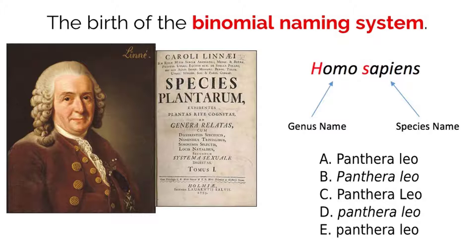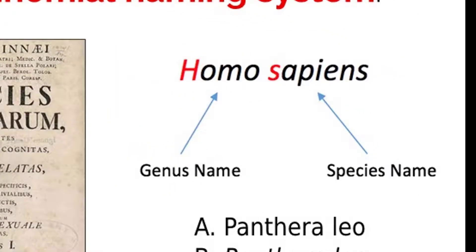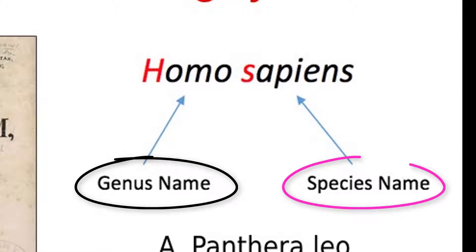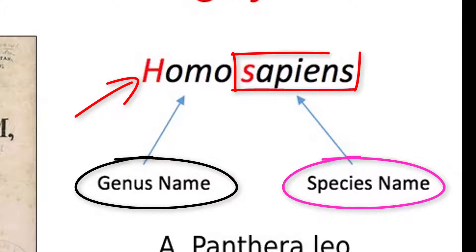This system requires each individual species to have a two-part name with very distinct formatting. This allows each individual organism to have a unique name that also classifies their relation to other organisms. A name written in scientific nomenclature, which uses this binomial system, is created by the genus name and the species name of that organism. The first letter of the genus name is always capitalized, while all letters of the species name are lowercase.